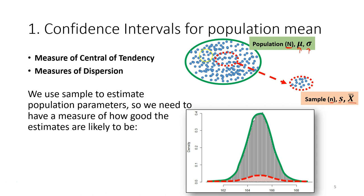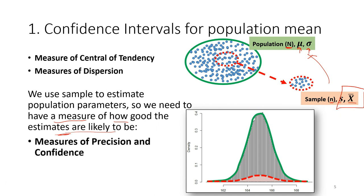As we discussed in the last lecture, we use sample to estimate population parameters. We need to have a measure of how good our estimates are likely to be. For example, we have a population, we don't know the parameter, and because it is impossible to get all the data, we take a sample and calculate the mean and standard deviation. We use these as estimates for the population parameter, but we also need to measure how good our estimate is — its precision and confidence. This is what we call the confidence interval.